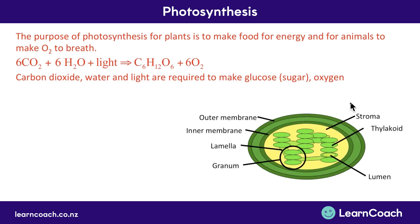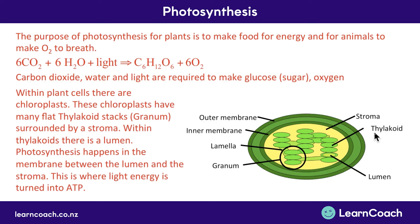Third, the structure of the organelle. We know the organelle is the chloroplast. We can draw the outer membrane, the inner membrane, the stroma (the space inside), the lamella that holds it all together, the thylakoid disks, the granum (stacks of those disks), and the lumen inside each disk. Photosynthesis takes place in the membrane between the stroma and the lumen. Within plant cells there are chloroplasts — the specialized organelle — which have many flat thylakoid stacks called granum, surrounded by stroma, with a lumen inside each thylakoid. Light energy is turned into ATP in that membrane space.